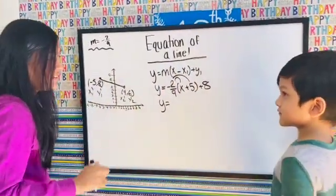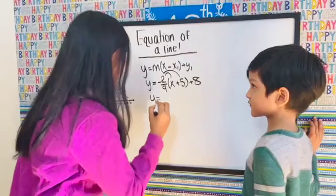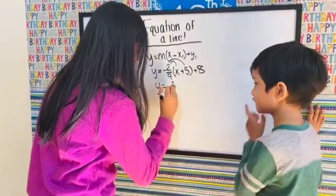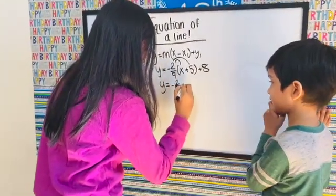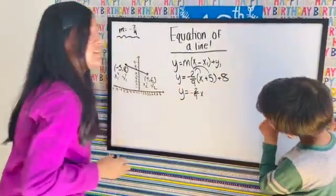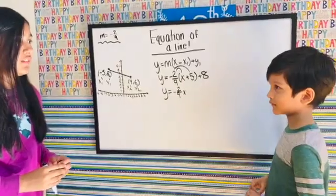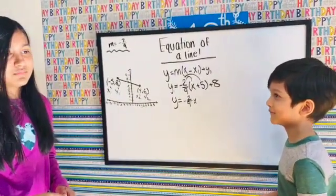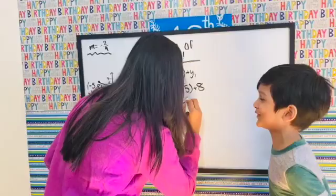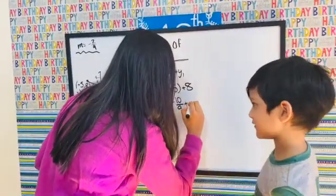We distribute negative two over nine. Negative two over nine times x is just negative two over nine x. Then negative two over nine times five — that's negative ten over nine. And that's easy. Plus eight.